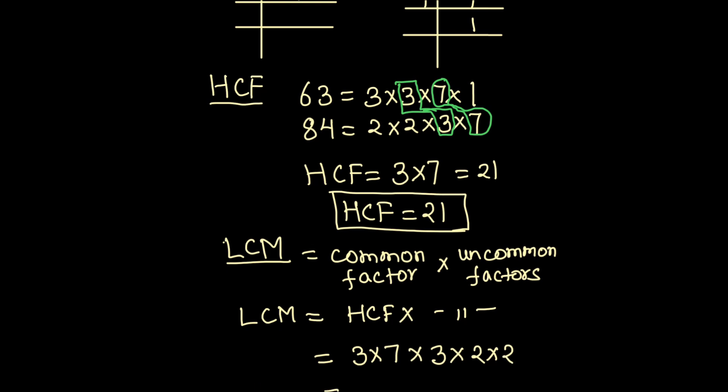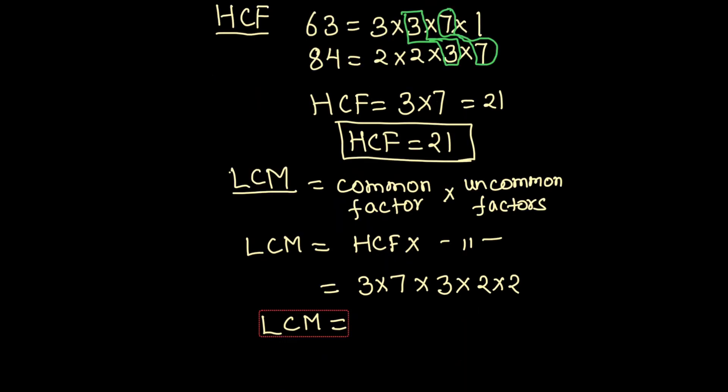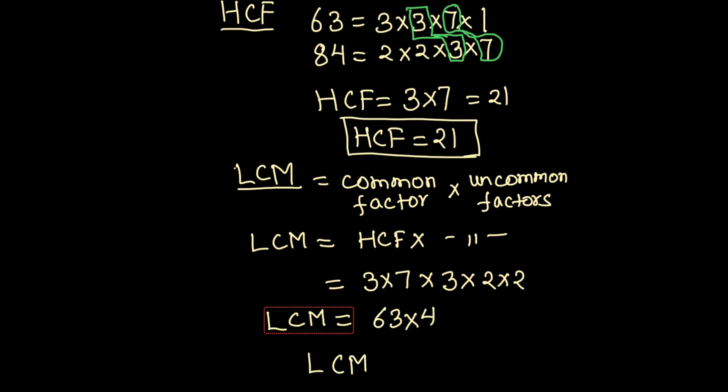So LCM will be 3 times 7 which is 21. 21 times 3 is 63 and 63 times 4. LCM comes out to be 4 times 3 is 12, 1 carried over, 4 times 6 is 24, 24 plus 1 is 25. So LCM is 252.